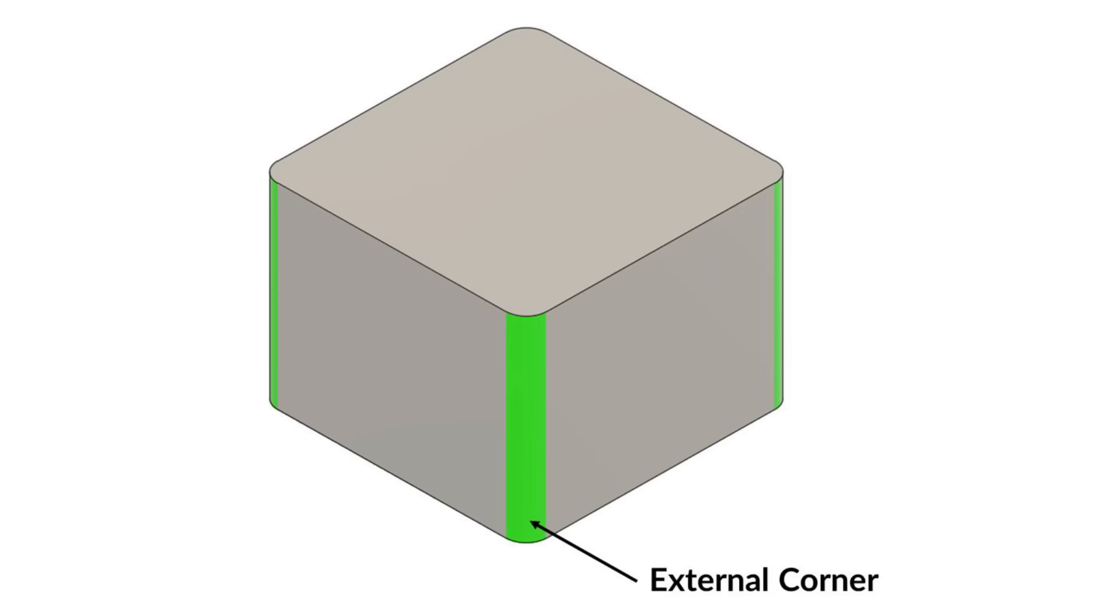Always add small fillets to all external corners. They are free features for CNC milled parts. Any radius will work. This type of fillet doesn't drive any tooling due to the fillet being on an outside corner. This will reduce sharp edges and eliminate weak corners that could easily scratch or damage other components during assembly.